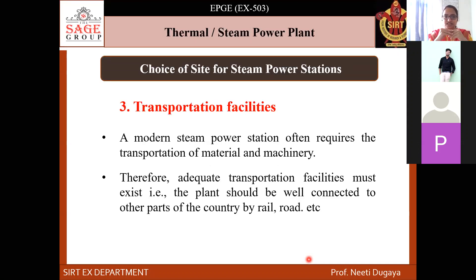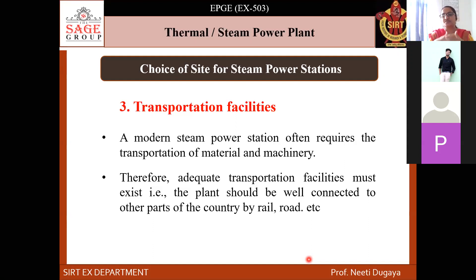The third point is transportation facilities. Modern steam power stations often require transportation of machines and materials. Thermal power plant maintenance is among the highest of all power plants — involving air preheaters, economizers, forced draft fans, induced draft fans, cooling towers, pumps, turbines, alternators, circuit breakers, transformers, bus bars, coal handling, ash handling, and boiler assemblies. So proper transportation of material and machinery must be ensured.